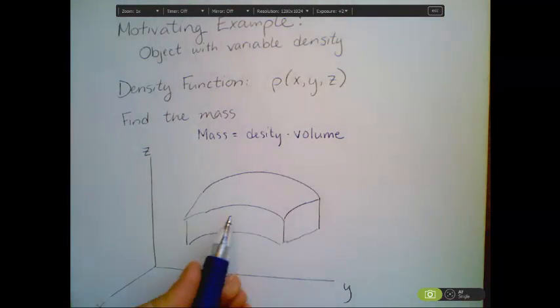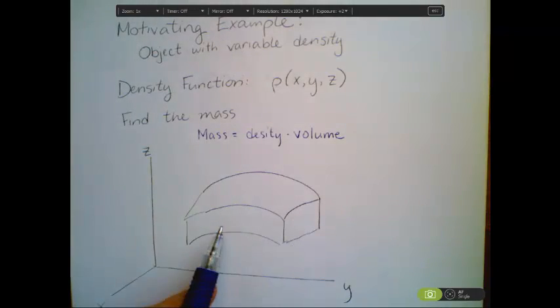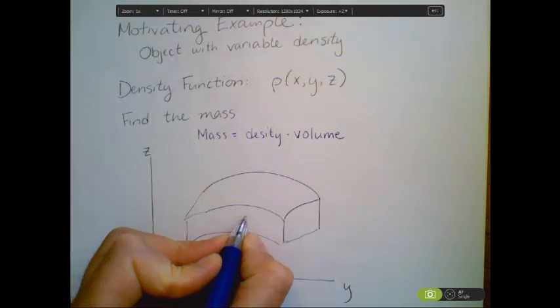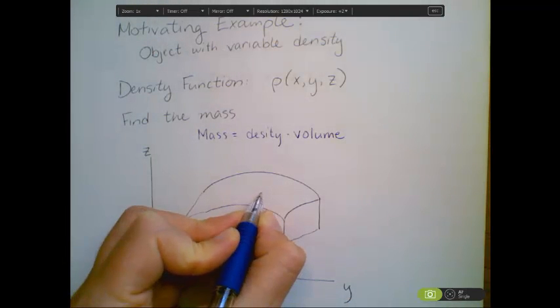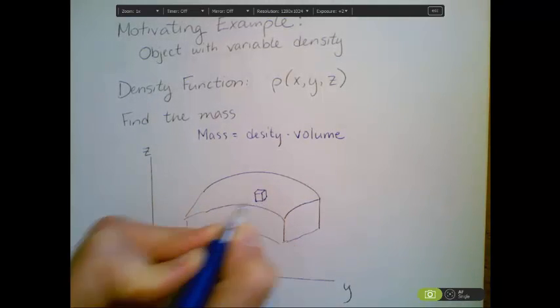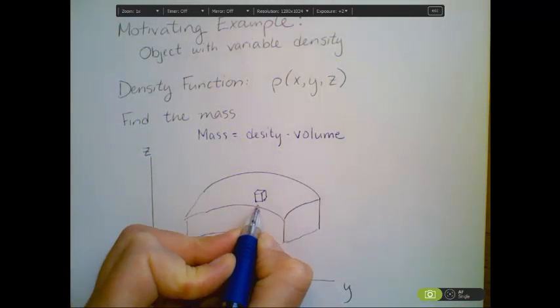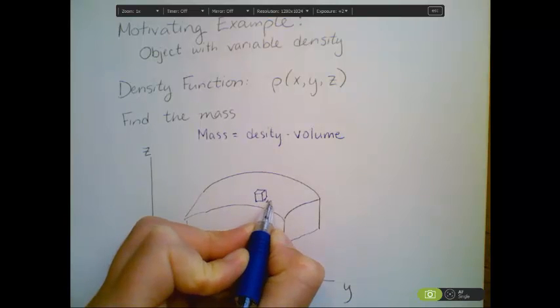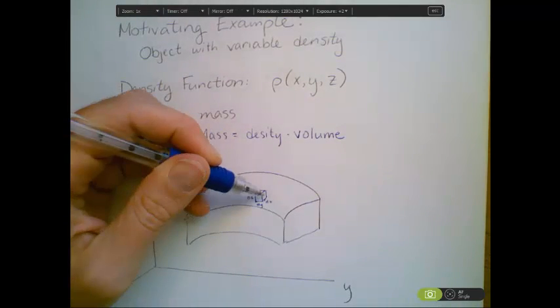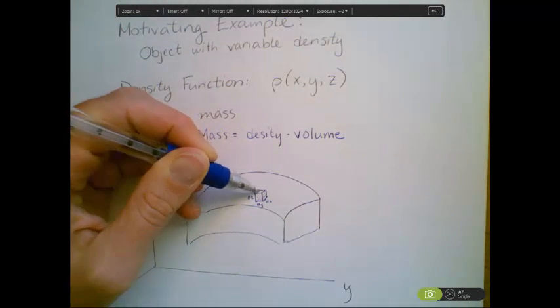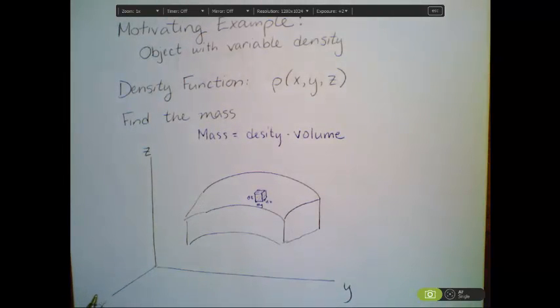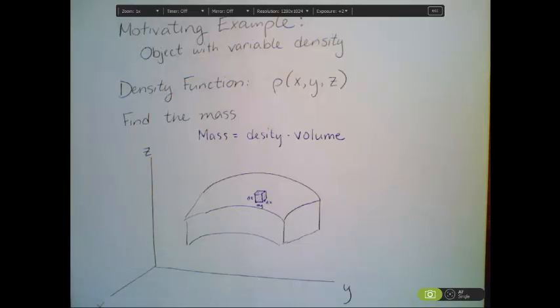Mass is equal to density times volume. But the problem is that each little piece in this has a different density. So what I'm thinking of when I do triple integration is I take out like one little piece within here, one little tiny dx, dy, dz box, and I calculate what is the density for this tiny little box, and then I sum up all of the densities over the whole object, and that gives me the total mass.